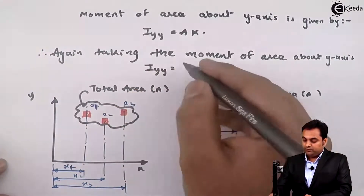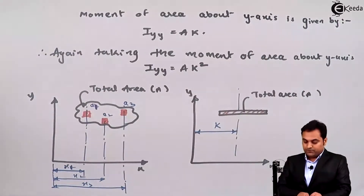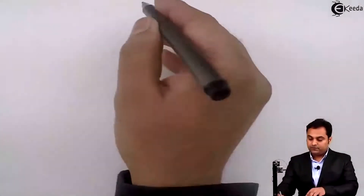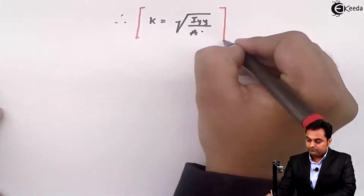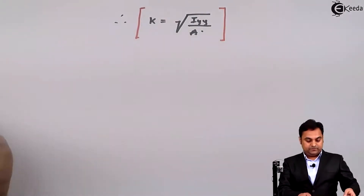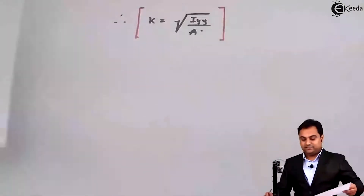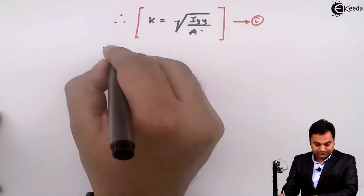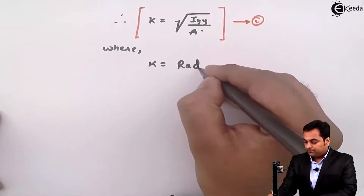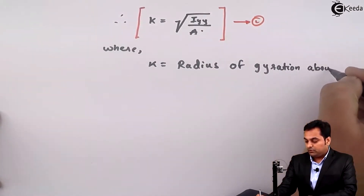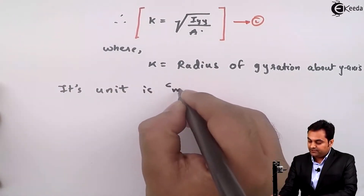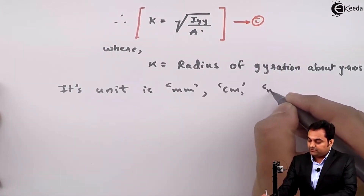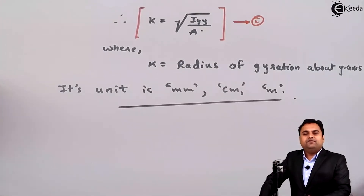When I am again taking the moment of area about the y-axis by taking distance x, that will become Iyy equal to A into k squared. So from this I can say that k is equal to the square root of Iyy upon area. This is equation number 2, where k is the radius of gyration about the y-axis. Its unit — since it is a radius — will be either in terms of mm, centimeter, or meter. Here in this video we have seen the definition and concept behind radius of gyration.